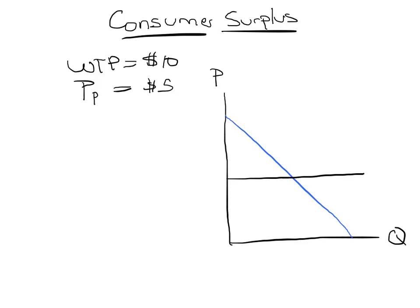For instance, if the price was around here—this is P1—then the consumer surplus will be this area in between the price and the demand curve.